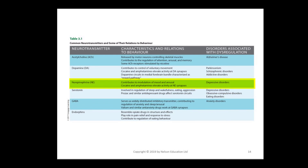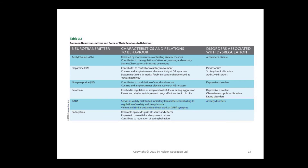Norepinephrine contributes to the modulation of mood and arousal. Cocaine and amphetamines elevate activity at the norepinephrine synapse, and many depressive disorders are connected with norepinephrine. Serotonin is involved in regulation of sleep, wakefulness, eating, and aggression; Prozac and similar antidepressants affect serotonin circuits; and depressive, obsessive-compulsive, and eating disorders are associated with serotonin dysregulation. GABA serves as a widely distributed inhibitory transmitter contributing to regulation of anxiety, sleep, and arousal; Valium and similar anti-anxiety drugs work on GABA synapses. Endorphins resemble opiate drugs in structure and effects, play a role in pain relief and response to stress, and contribute to the regulation of eating.